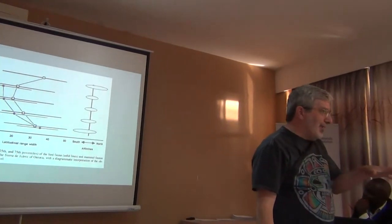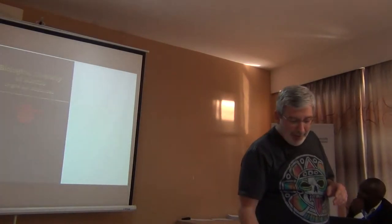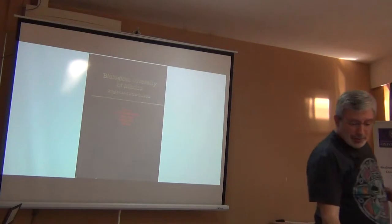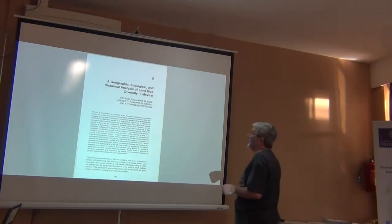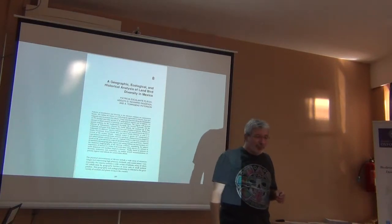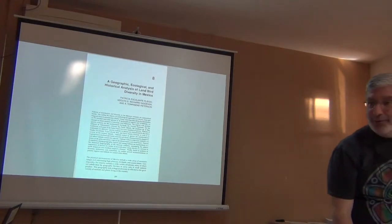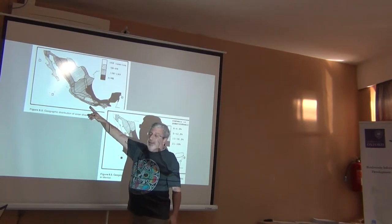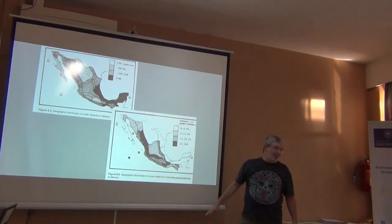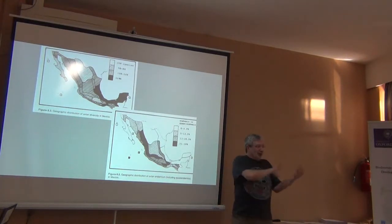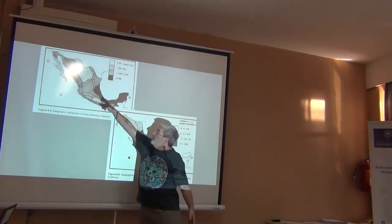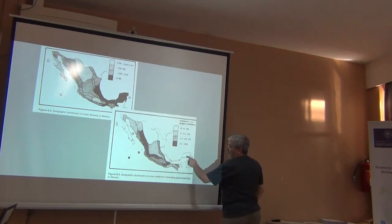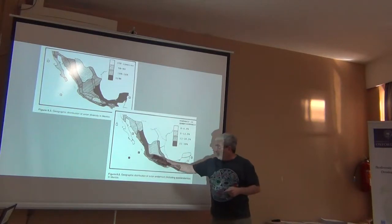There was a synthesis book done in the late 80s — Biological Diversity of Mexico: Origins and Distribution. One of my earlier publications was a geographic, ecological, and historical analysis of land bird diversity in Mexico. One of the things we did was show a map of avian diversity and avian endemism in the country. You can see the same contrast: in the southeastern lowlands you have high diversity, but in the interior you have low diversity. But endemism is essentially zero in the southeastern lowlands — it's concentrated up in the mountains.